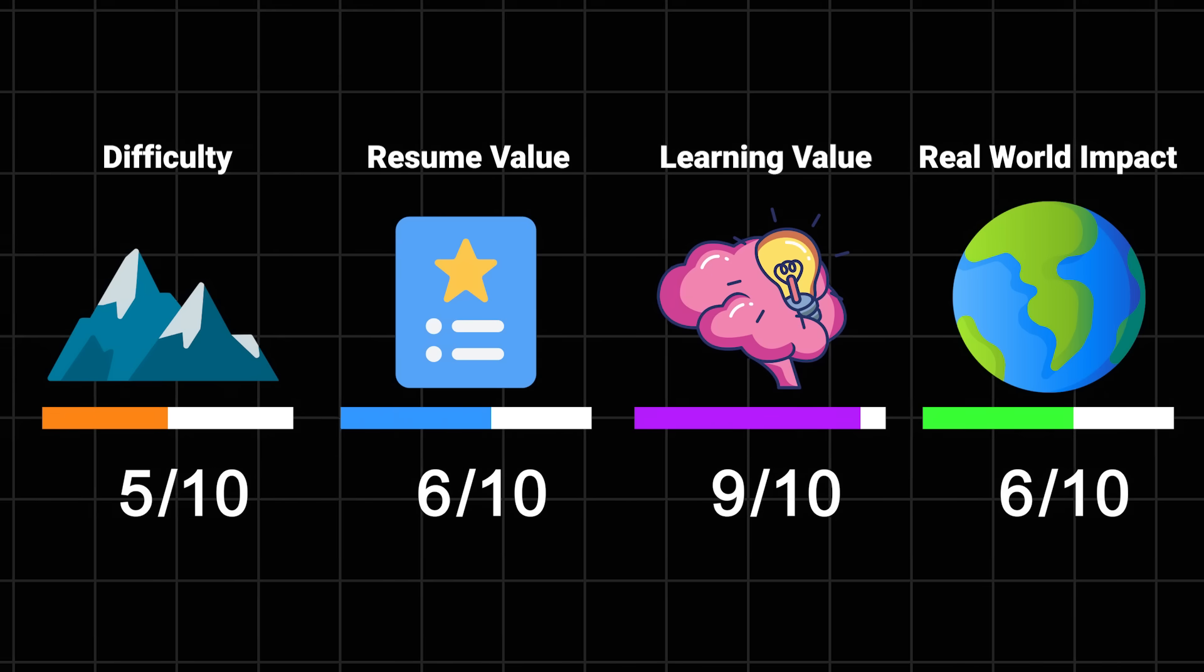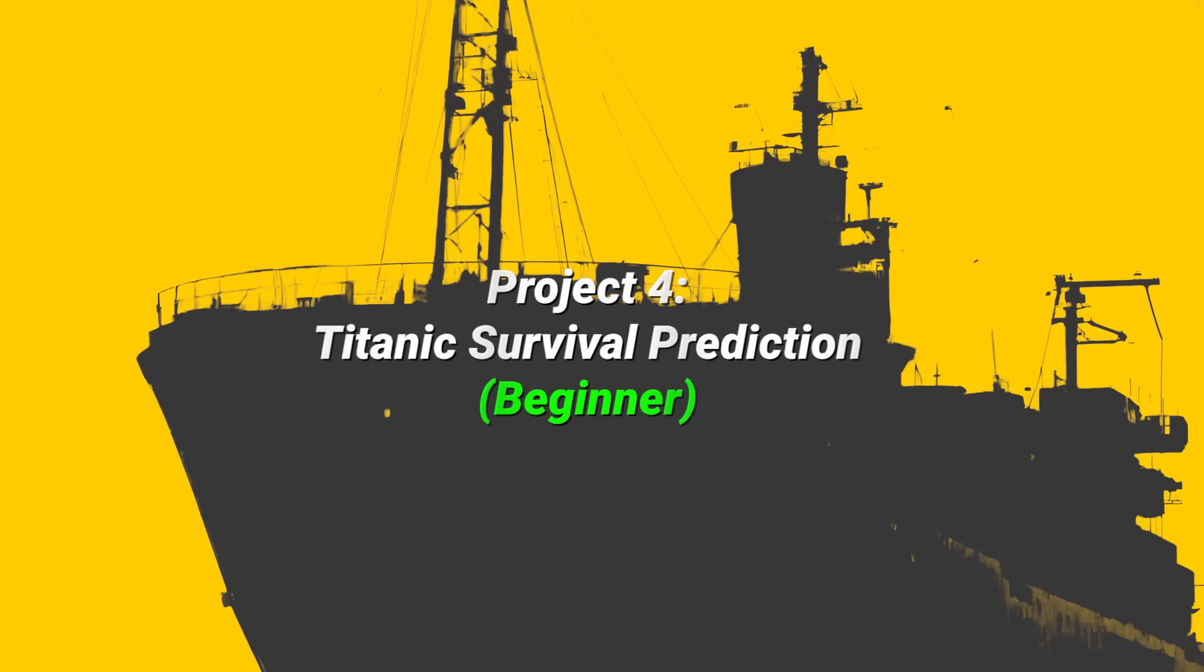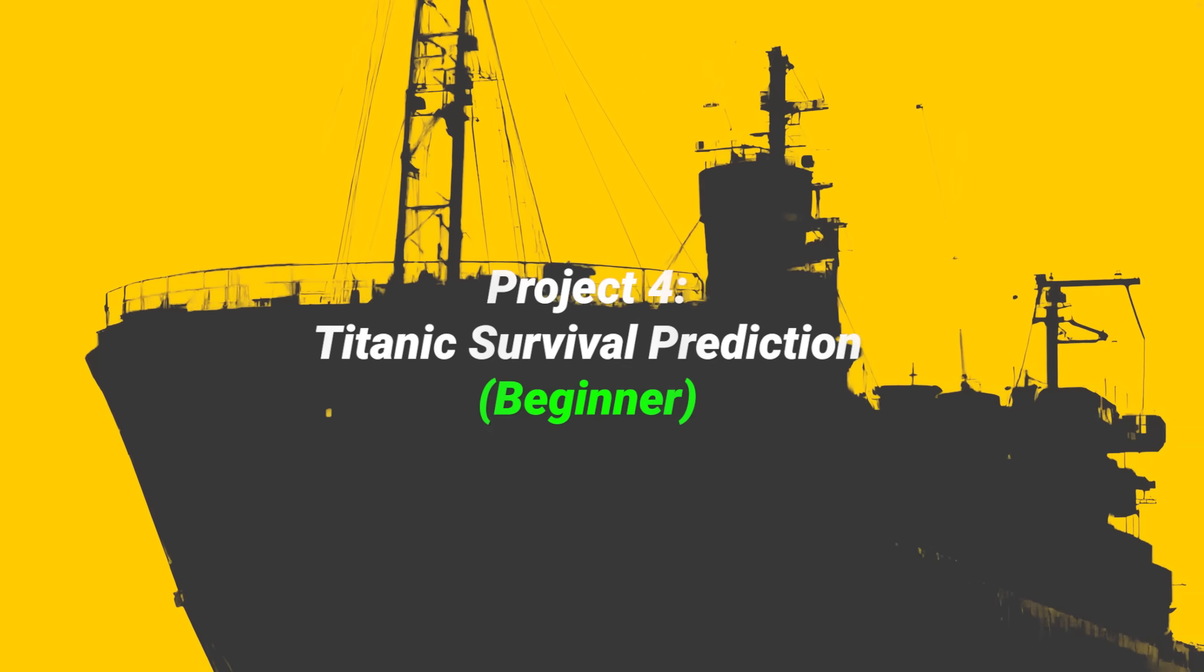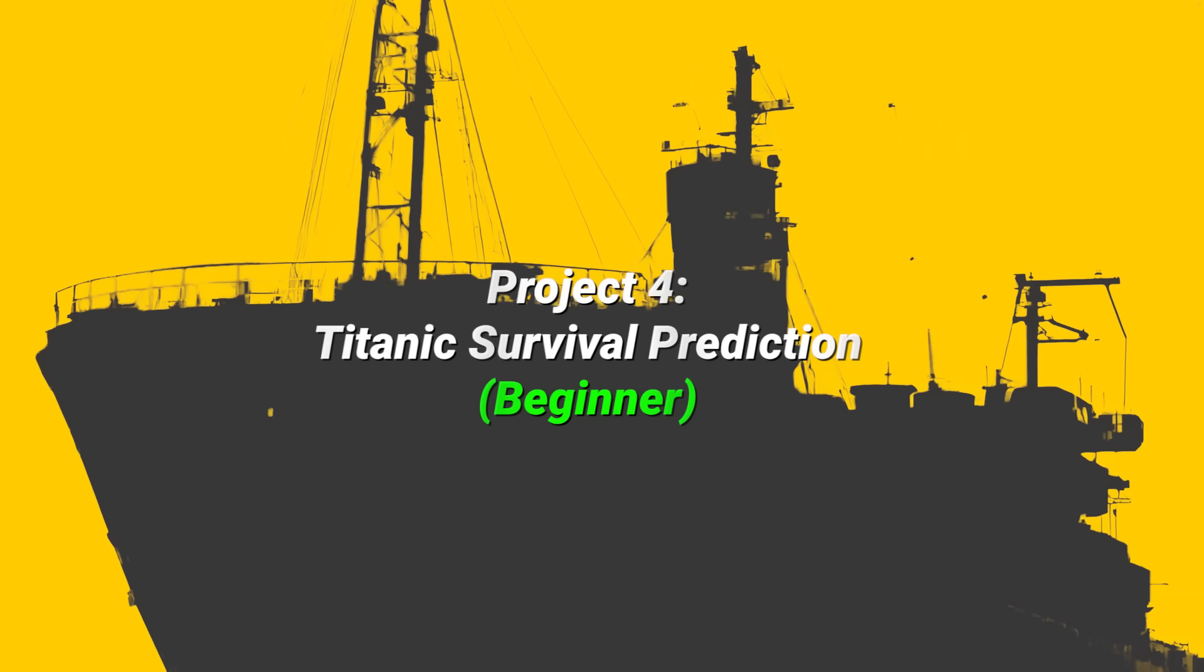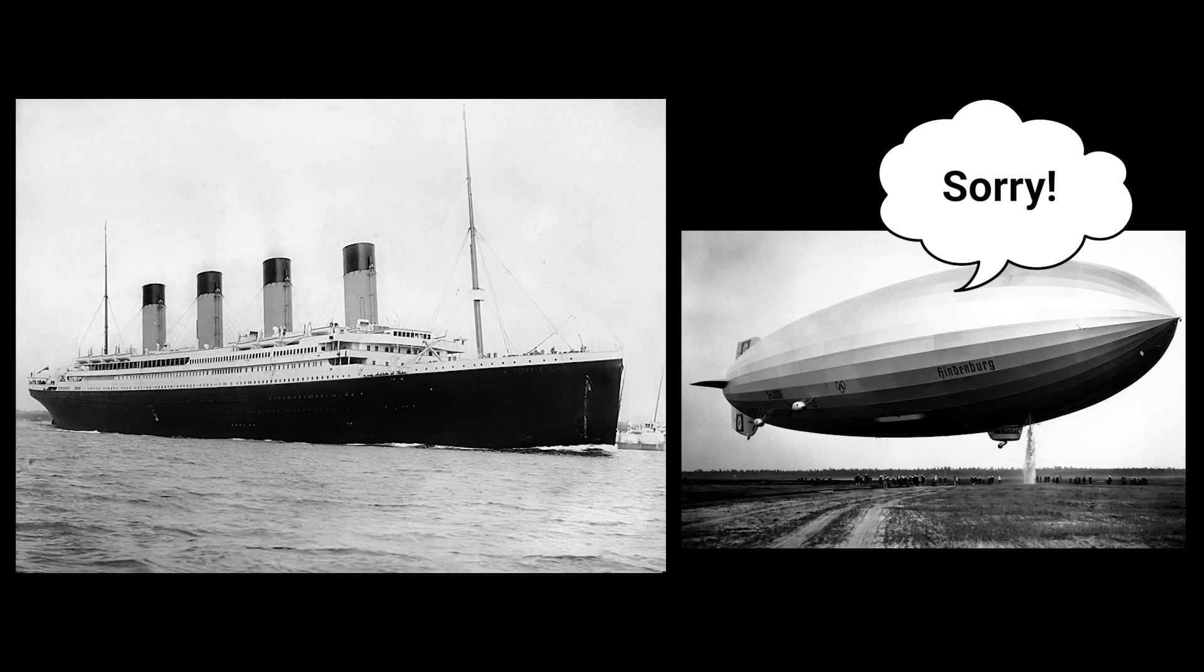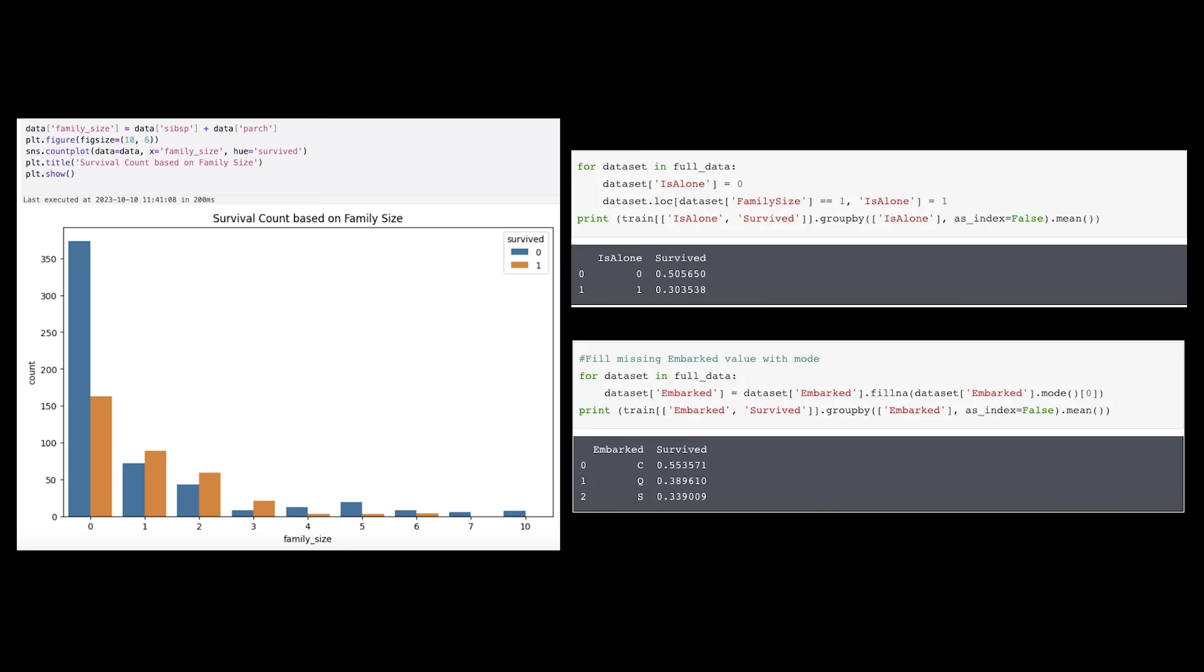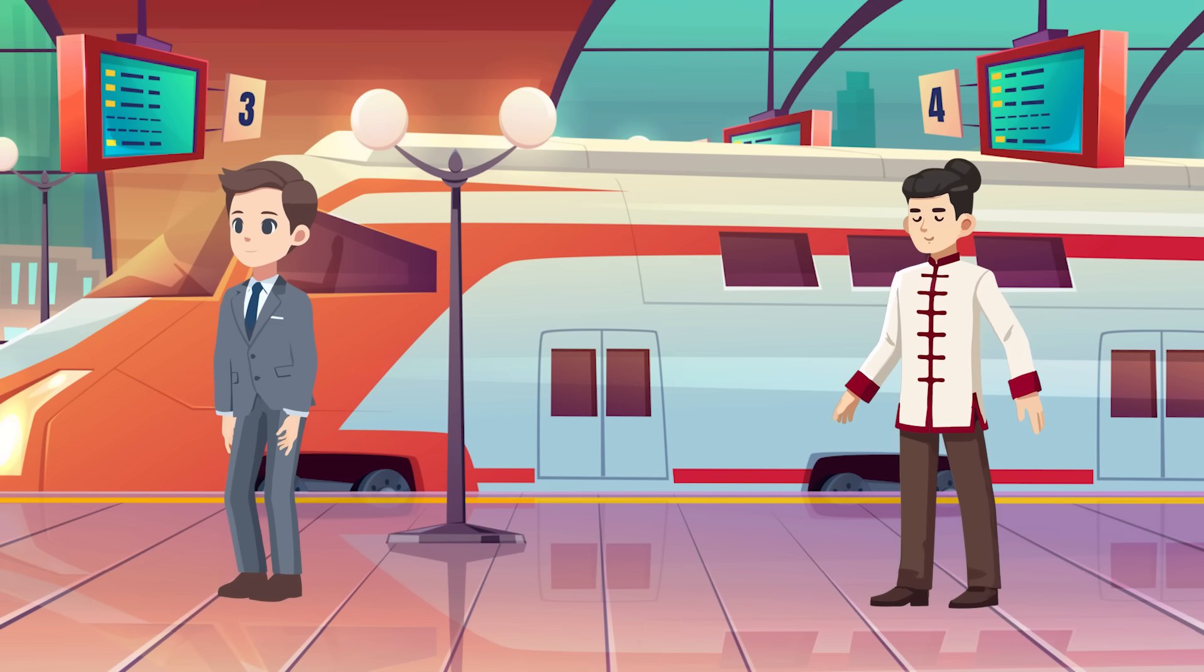Titanic survival prediction - time for a classic. We're going to predict who survived the Titanic. Now I know what you're thinking: another Titanic project? But there's a reason why this is data science's favorite disaster. Sorry, Hindenburg. This will feel much more like a real dataset than the flower project. You'll learn how to handle missing data - turns out record keeping wasn't great in 1912. Create features that actually make sense, like combining family size data, and why being rich really improved your chances of survival. Surprise.